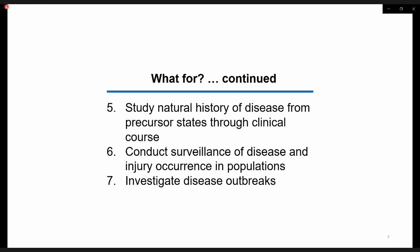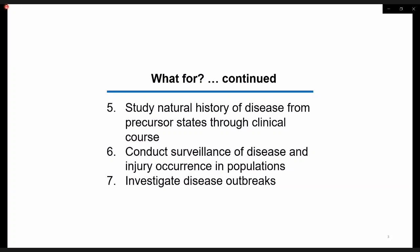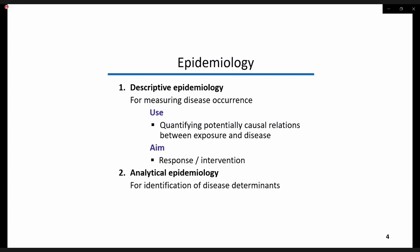Now the next three points follow. Point five is about knowing and evaluating the history of disease from initial states through clinical course. This is important to be able to carry out point six and seven, which are conducting the surveillance of disease and injury in certain populations and investigating the outbreaks, respectively.